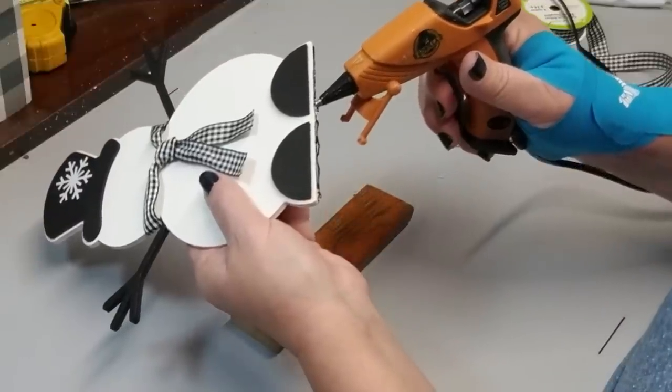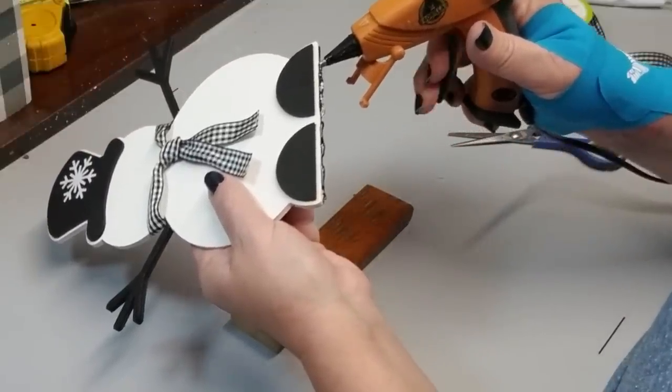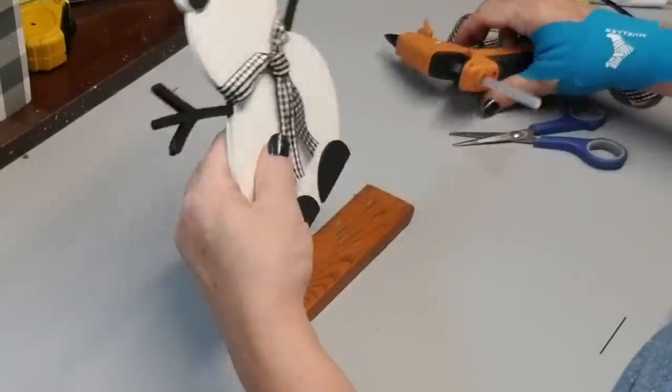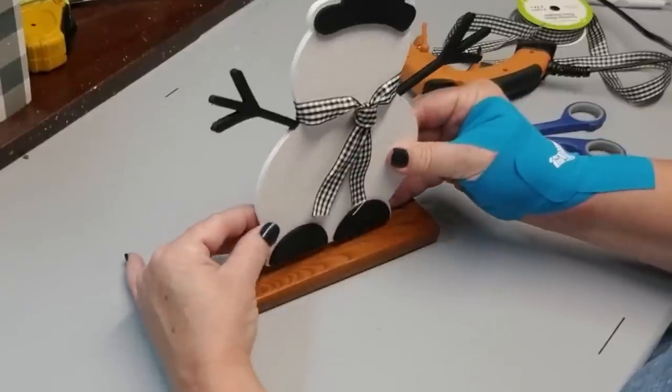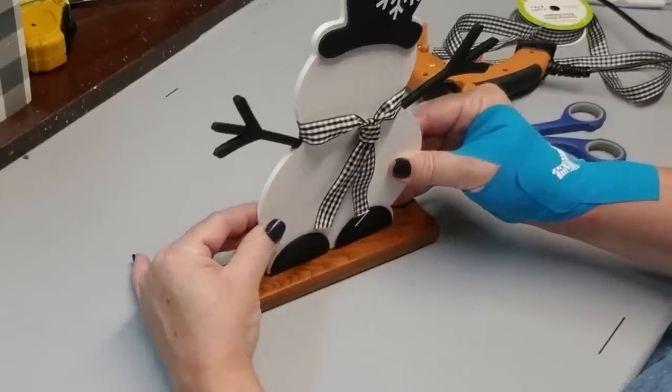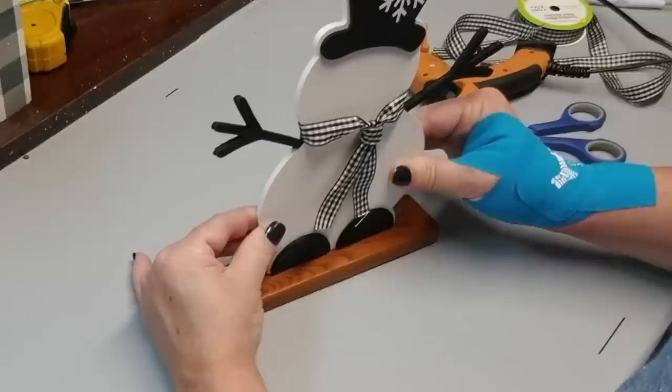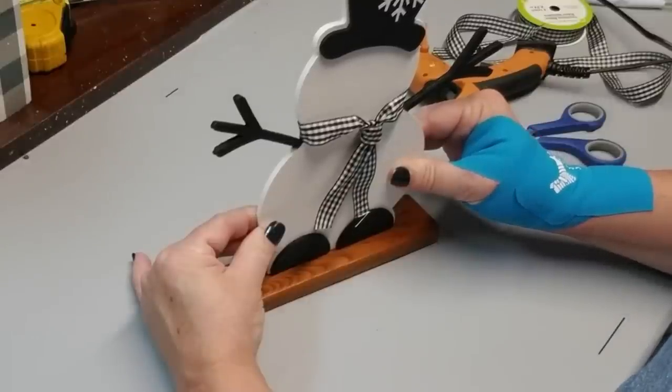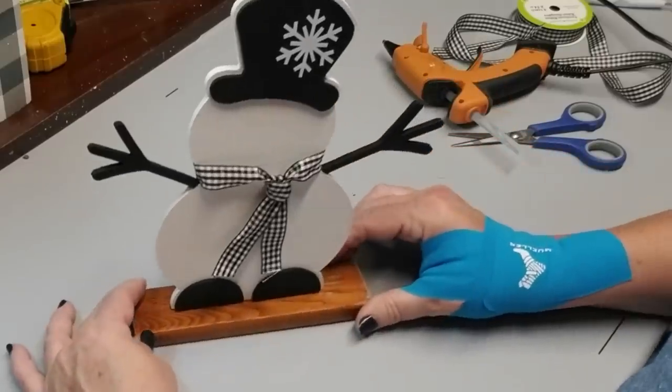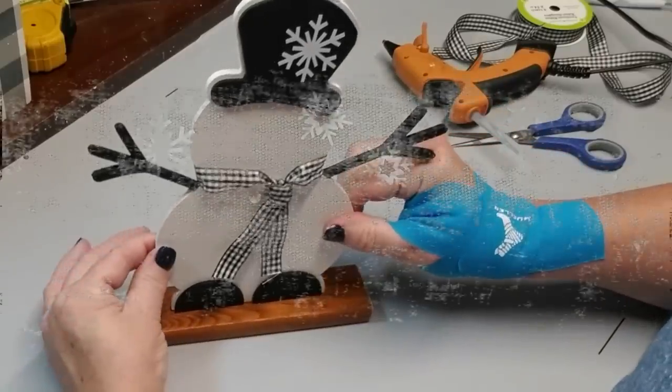I'm going to leave this piece of wood this color that it is, it's actually a piece of cedar that I brought home from the cottage. It's already been varnished and I know it's kind of an orangey color but I like the contrast between the white and black and this piece of wood, so this wood will also be included as part of the craft kit. I think this snowman turned out super cute. What do you guys think?